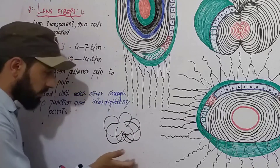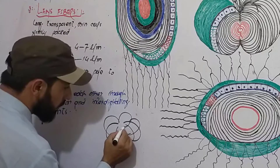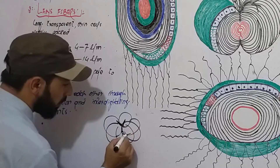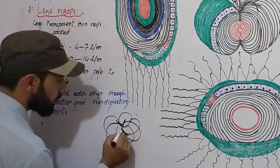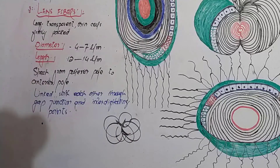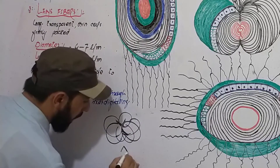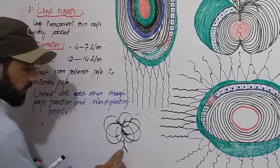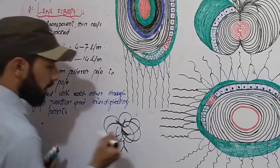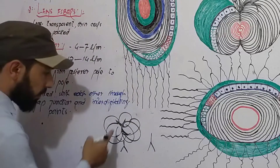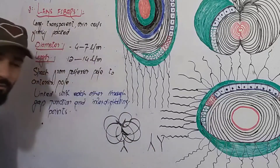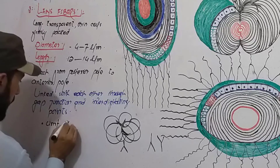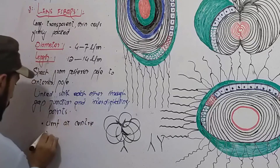On the anterior surface, all these fibers will make a Y-shaped union — an erect Y-shaped union. On the posterior surface, they will make an upside-down Y. So on the posterior surface, the Y is inverted, and on the anterior surface, the Y is erect. All these fibers unite at the center of the lens.